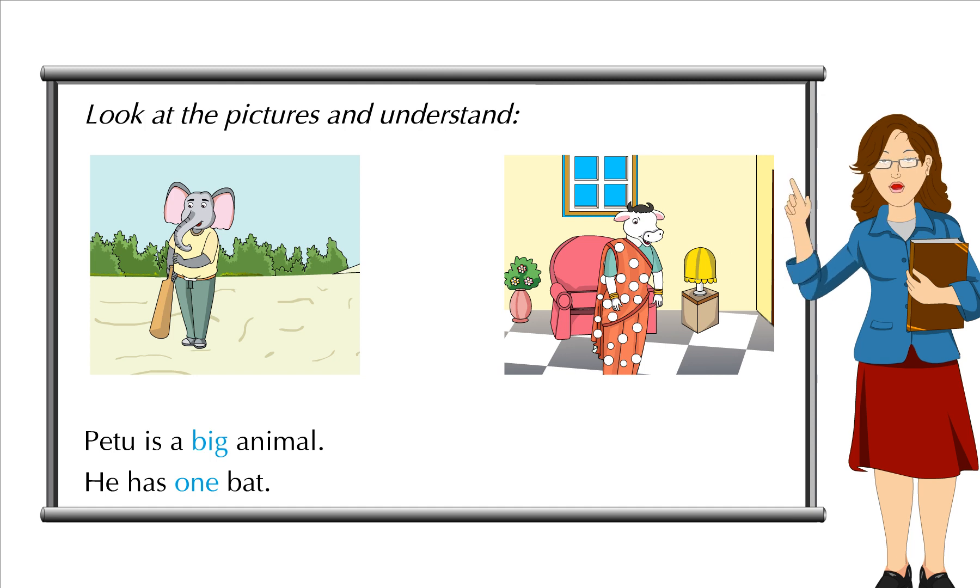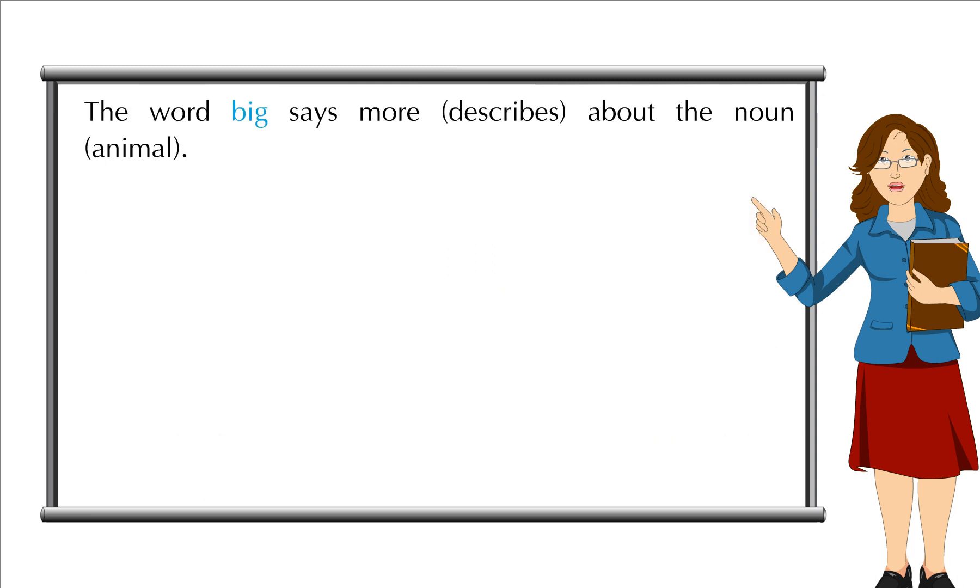Pitou is a big animal. He has one bat. Mrs. Cow wears a red saree. The word big says more, describes about the noun animal.